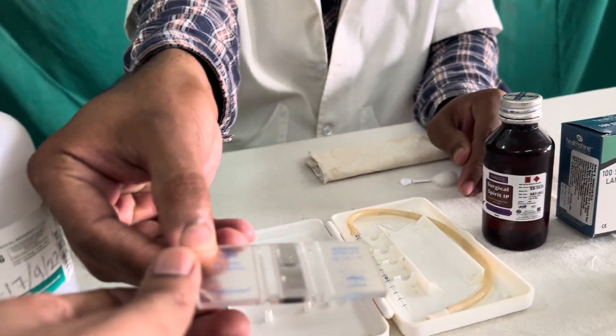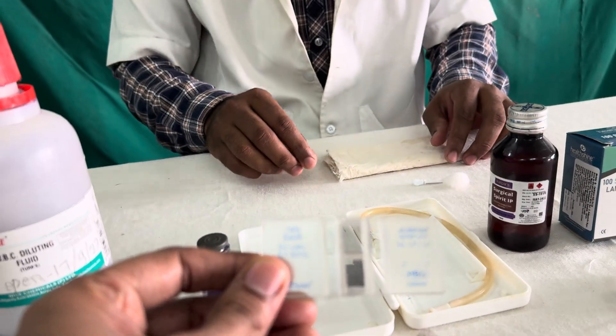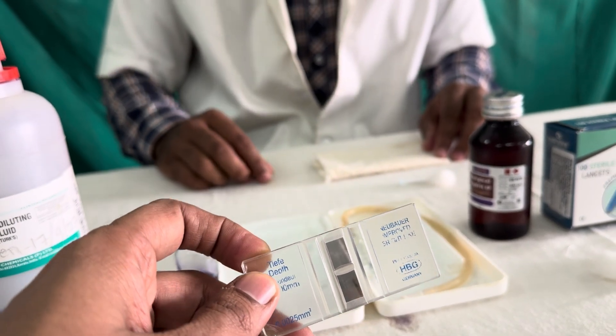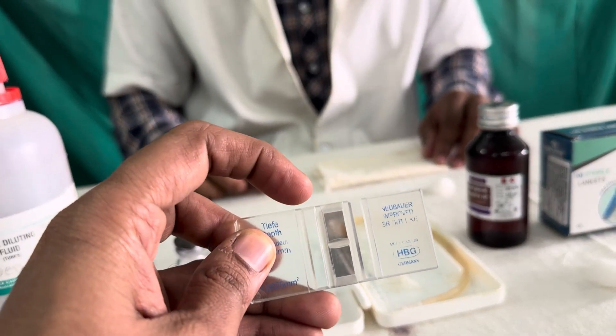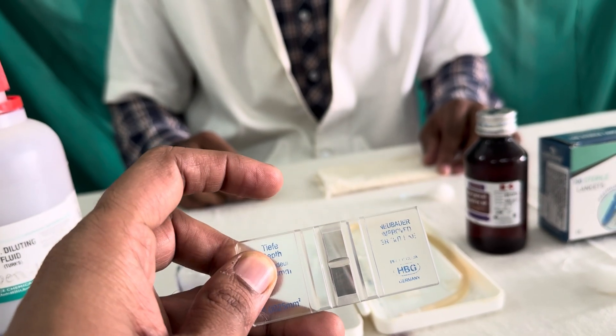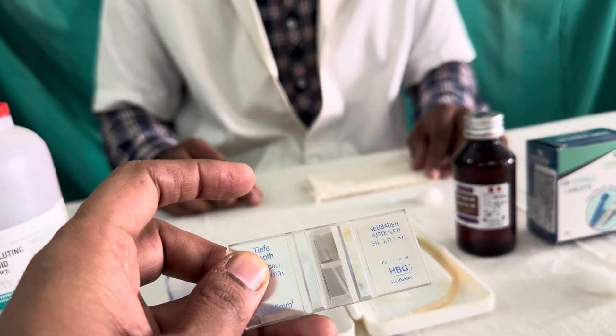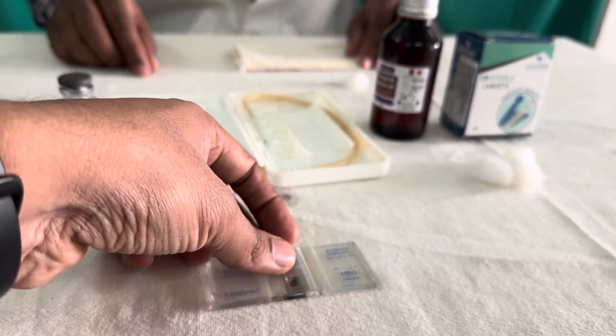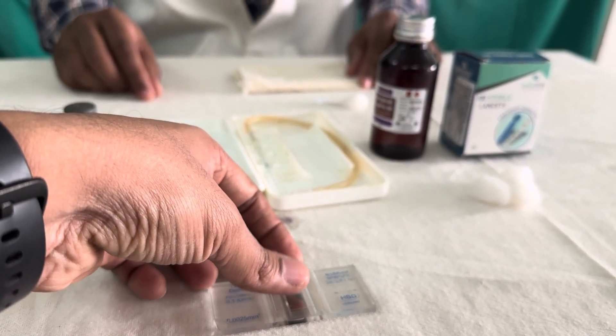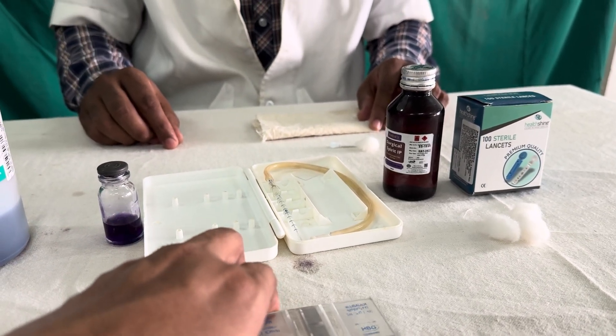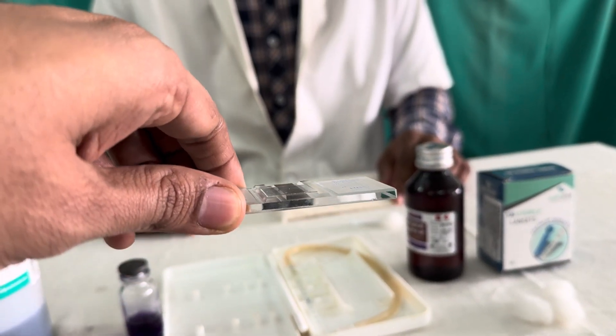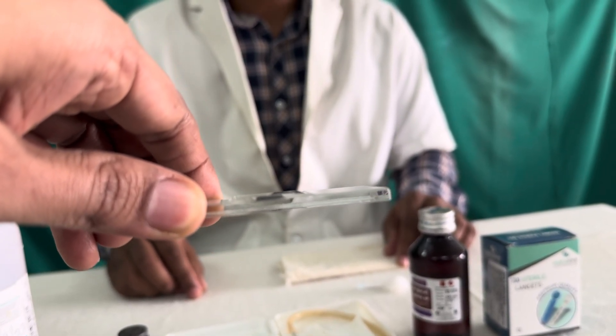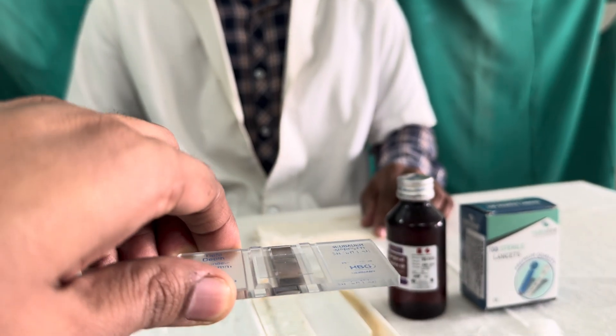We have already discussed this in our last video of total RBC count, but still we will just briefly describe this. You can see the silver color, there are two stands or the platforms which are separated by a H-shaped groove. If we place a cover slip over this improved Neubauer chamber, then you can see that this platform, the silver color platforms are a bit lower level as compared to the cover slip because of that groove. The depth is around 1/10 millimeter.